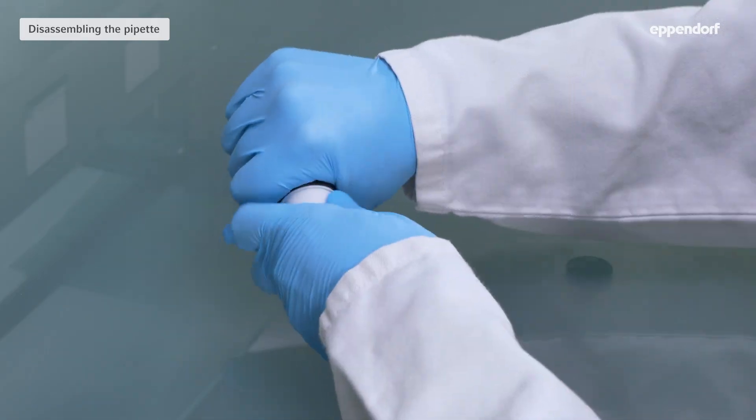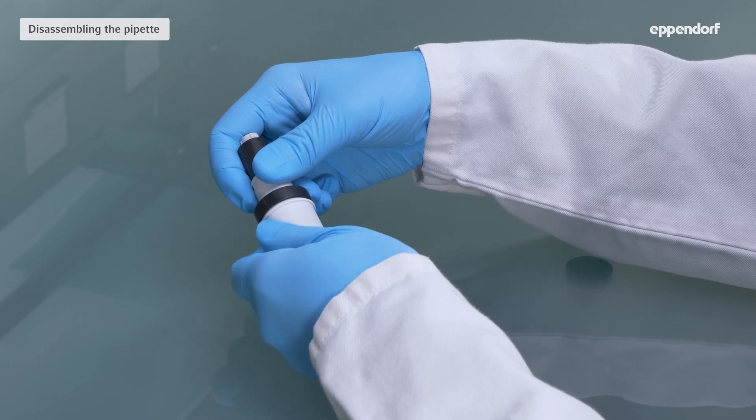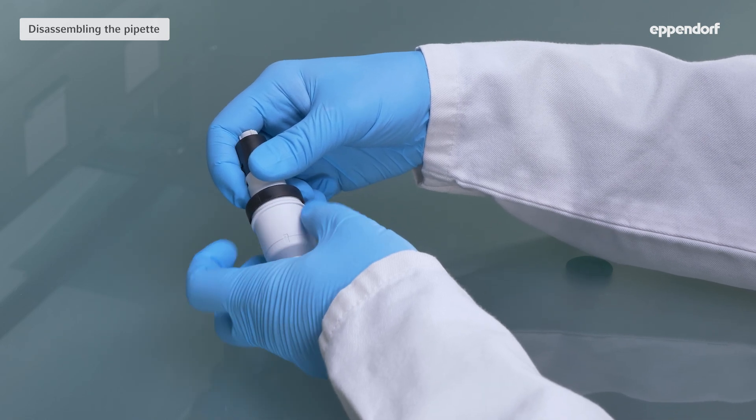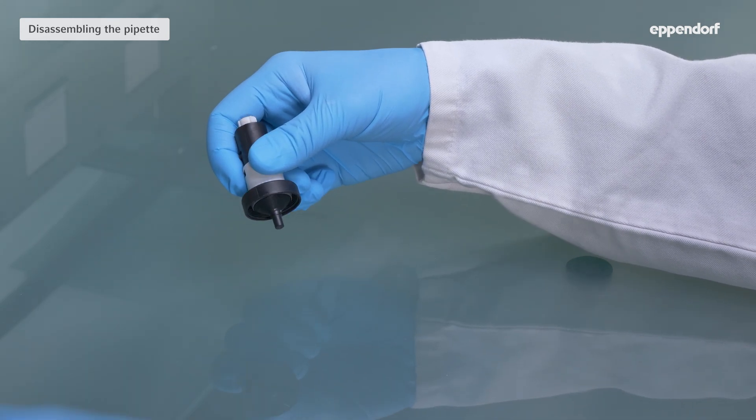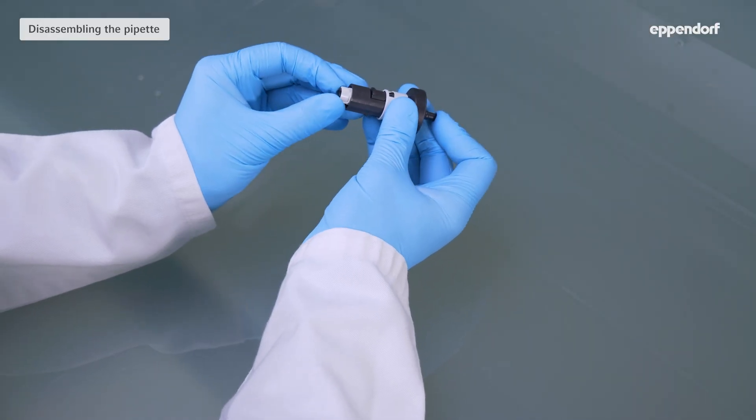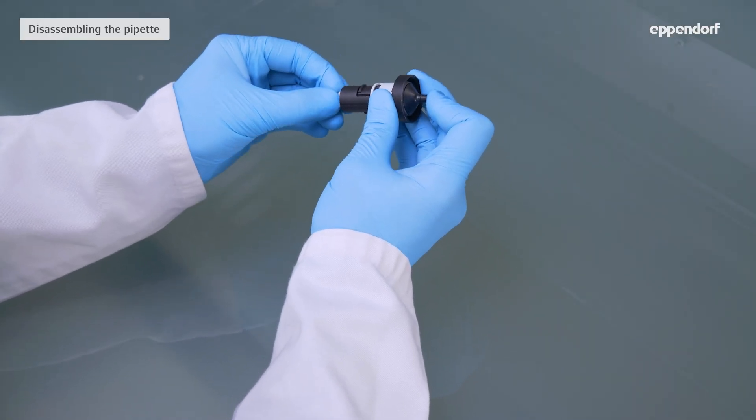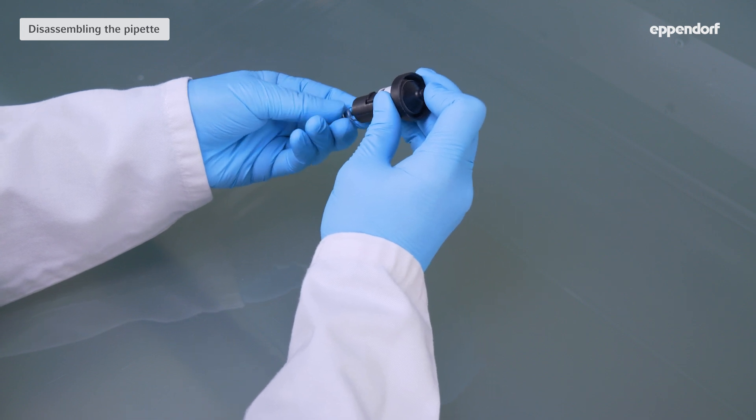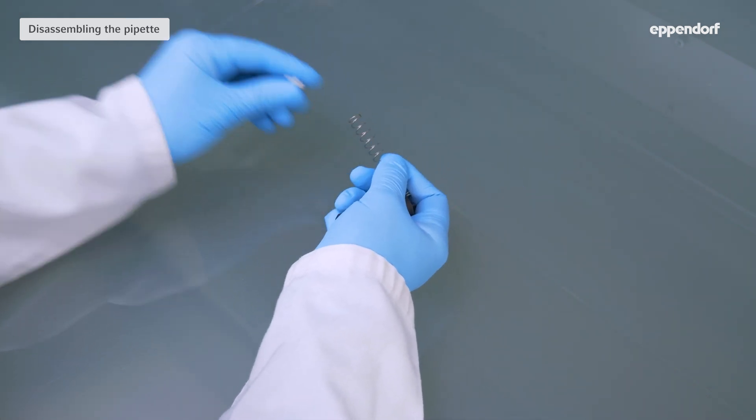Unscrew the cylinder and the piston guide. Support the piston from below. With the other hand, push the piston holder down and carefully turn it 90 degrees to unlock the piston spring and the piston.